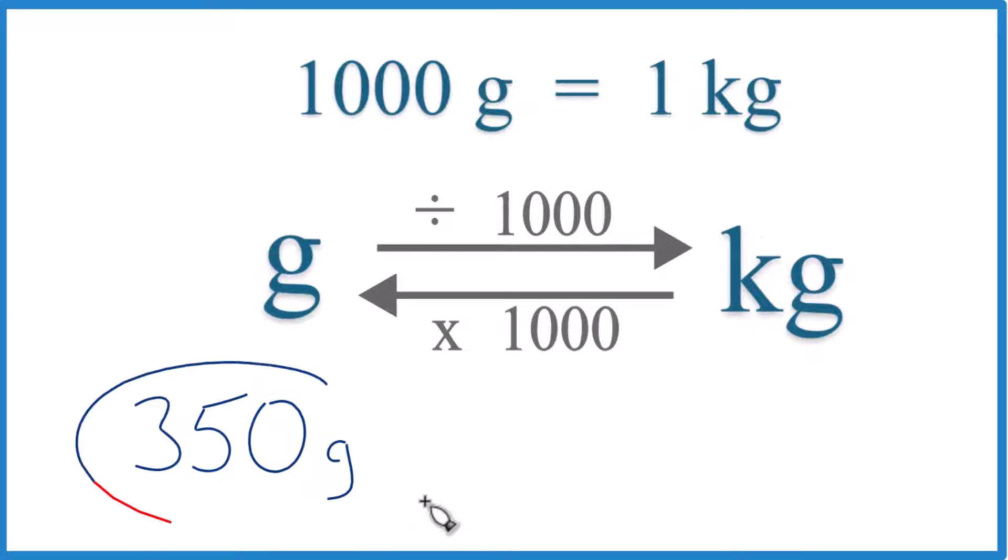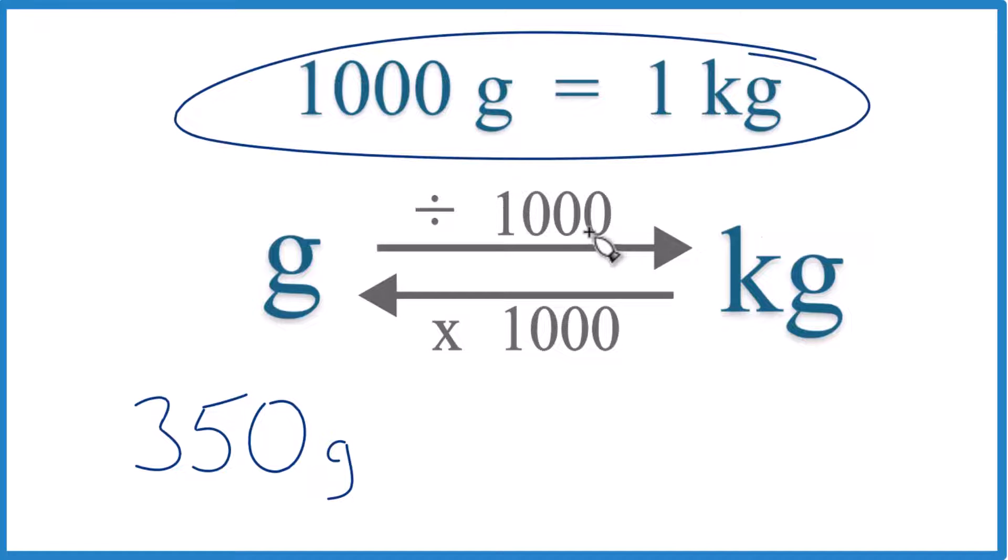So here's how you convert 350 grams to kilograms. First off, you need to know that 1,000 grams equals 1 kilogram. That's our conversion factor, something you want to memorize.